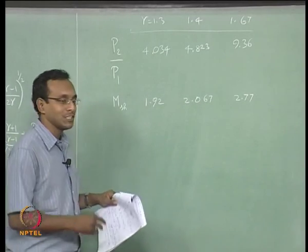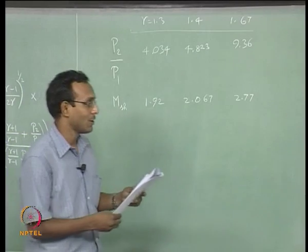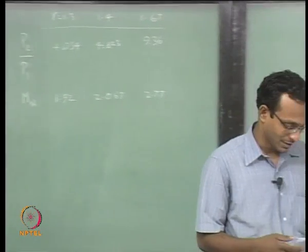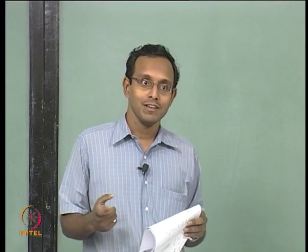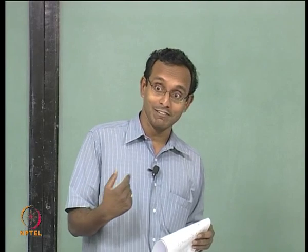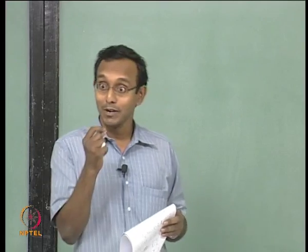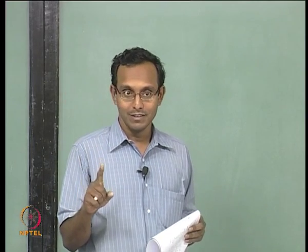Now I want to look at the actual velocity values — V2 — induced behind the shock. Before that, one more observation: even if my P2/P1 is not strong enough to induce supersonic flow behind the shock, the shock Mach number is always more than 1 for any P2/P1 > 1. So the shock itself is always supersonic, but the flow behind it can be very small in Mach number.